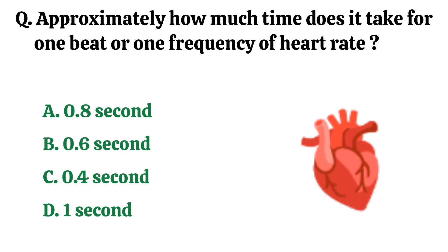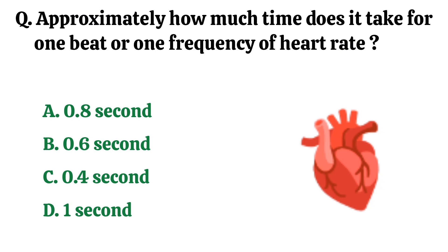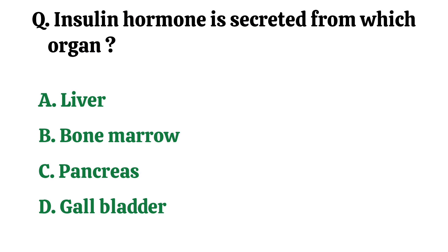Approximately how much time does it take for one beat, or one frequency, of the heart rate? The correct answer is option A. 0.8 seconds.